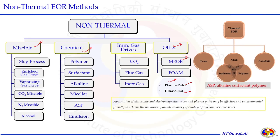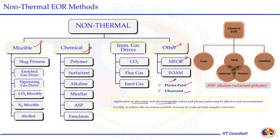In miscible injection, gas can be injected above the minimum miscibility pressure, dissolving into the crude oil, making it less viscous, and allowing it to flow toward the production well. In chemical injection, polymer, surfactant, alkaline, and combinations of them are injected to alter properties and let oil flow. Microbial EOR is similar to chemical EOR but uses biosurfactant instead of chemical surfactant. Other processes like ultrasonic waves, electromagnetic waves, and plasma pulse may also effectively recover oil in an environmentally friendly manner, but depend on the complex nature of the reservoir.